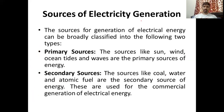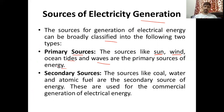Next are the sources of electricity generation. There are two sources: one is the primary source, which includes sun, wind, ocean tides, and waves — these are primary sources of energy which we get from nature. The secondary source includes coal, water, and atomic fuel — these are secondary sources used in the commercial generation of electrical energy.